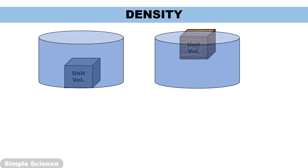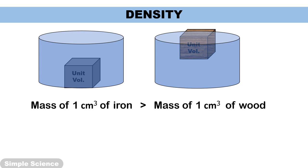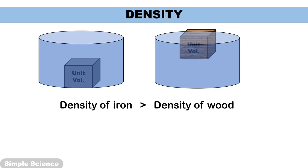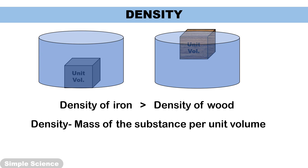Why does this happen? Because the mass of unit volume of iron — that is 1 cm cube of iron — is more than the mass of 1 cm cube of wood. That means the density of iron is more than the density of wood. So that is why iron, being heavier, sinks in water and the wooden cube, being lighter, floats in water. Mass is because of the particles, so particles in unit volume of iron are more than particles in unit volume of wood.